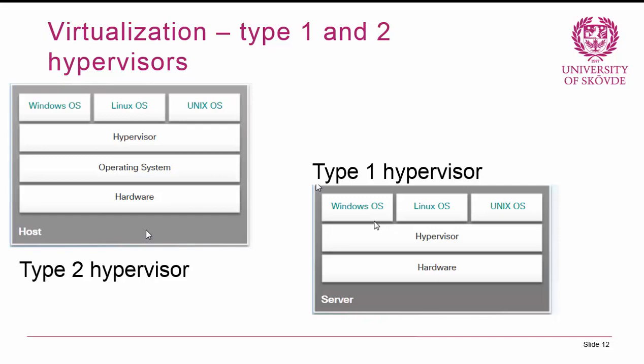A type 2 hypervisor, as shown in the picture, is installed within an existing operating system. So you have your personal computer as you are used to, and you can install a hypervisor into that — you still have everything as it was before, but you also have a hypervisor with other operating systems on top. This is how I use virtualization on my desktop in my office: I have my Windows 7 machine from the university IT department, but I can install a type 2 hypervisor so that I can have access to Linux or Unix whenever I need to.